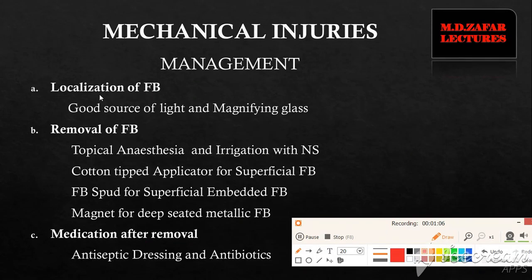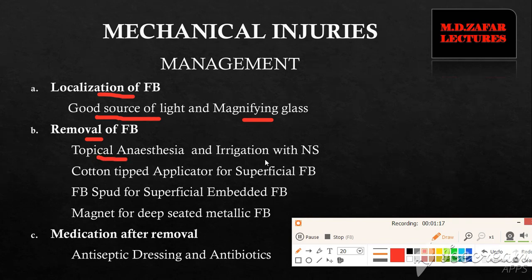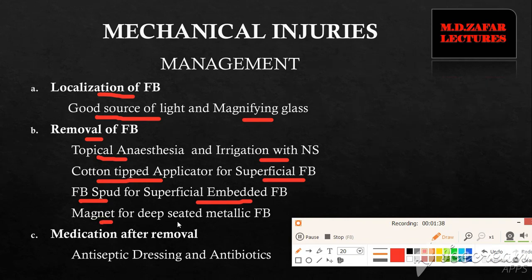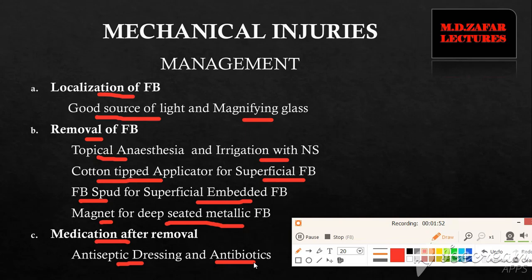In management, we first localize the foreign body using a good source of light and a magnifying glass. For removal, topical anesthesia and irrigation with normal saline are used. A cotton-tipped applicator can be used for superficial foreign bodies, a foreign body spud for superficial embedded foreign bodies, and a magnet for deep-seated metallic foreign bodies. After removal, antiseptic dressing along with antibiotics and analgesics for pain are given.